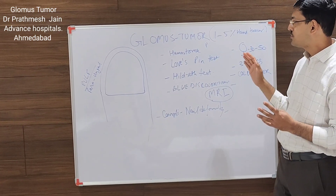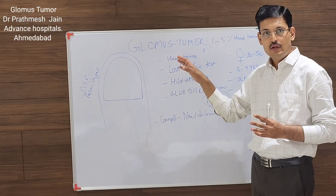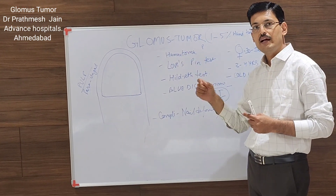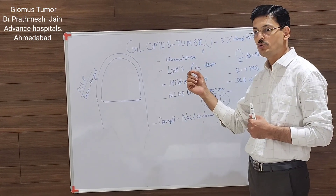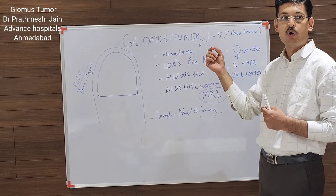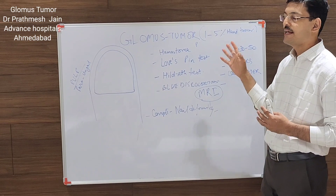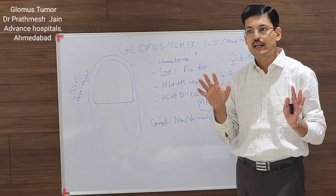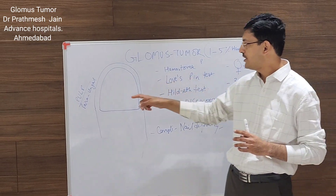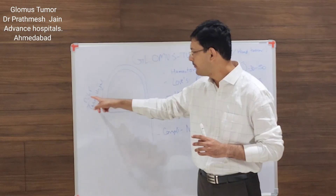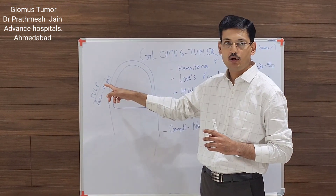If you talk about histology, it is a hamartoma. It basically arises from the endothelial cells of the glomus body, and usually it is seen on the peripheral parts of the body. The most common location is the pulp of the finger and the periungual area.